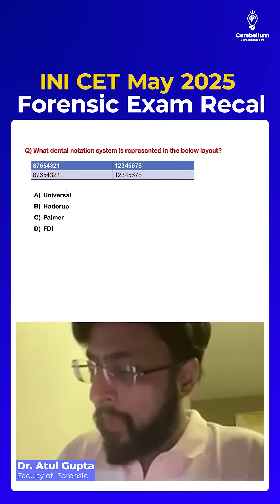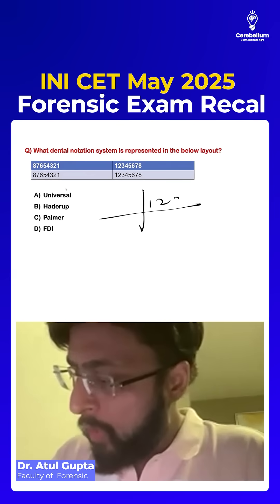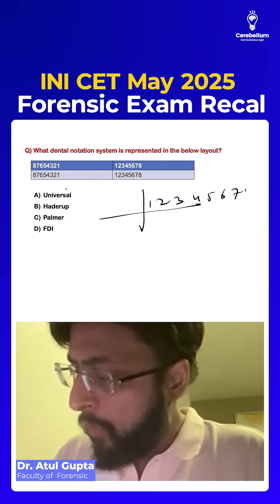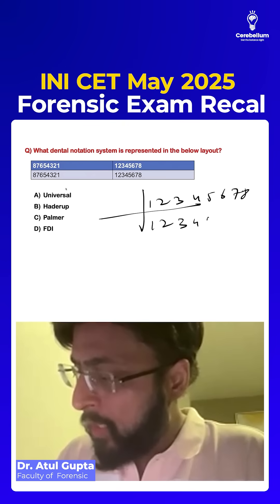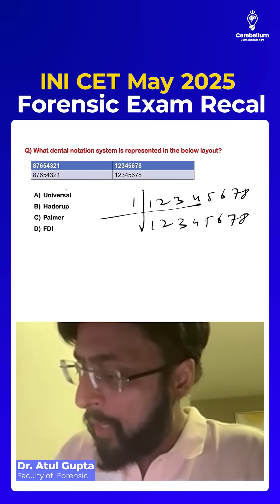So which dental notation is represented? Please remember whenever it is 1, 2, 3, 4, 5, 6, 7, 8 — always. So this is Palmers.